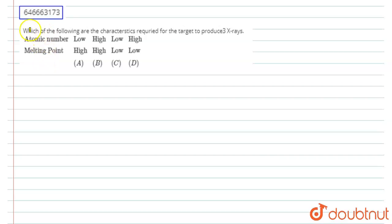In this question, which of the following are the characteristics required for the target to produce X-rays? Atomic number and melting point are given. We can see: atomic number low, melting point high; atomic number high, melting point high; atomic number low, melting point low; and atomic number high, melting point low.